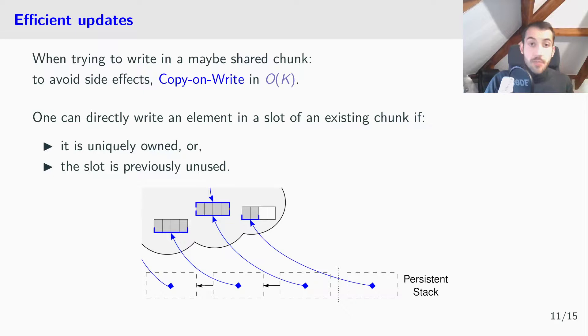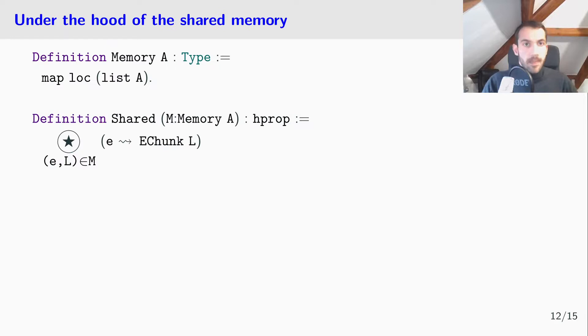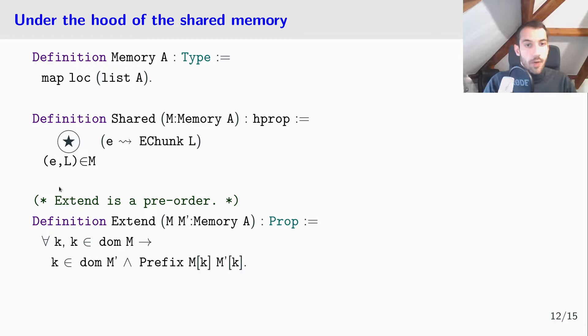Now let me show you how we handle this shared memory at the proof level. Indeed, the memory type is just a map from chunk addresses to their model, and the shared heap predicate is just the iterated star over the map that asserts that, in fact, on the heap, each chunk is related to its model. Then we can define the extend pre-order, and the memory M-prime extends M, if and only if the domain of M is included in the domain of M-prime and each chunk in M is a prefix of a chunk in M-prime.